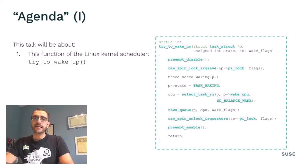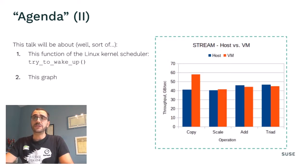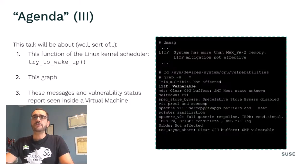In some more details, this talk will be about the TryToWakeUp function in the Linux Kernel Scheduler code, and it will be about a specific graph and log entries reporting an unmitigated vulnerability that I recently saw inside a virtual machine.